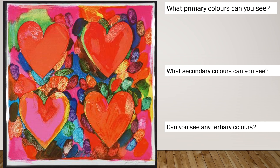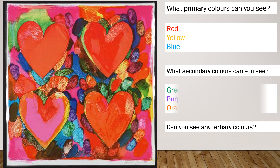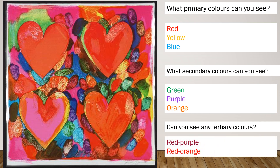Welcome back! I hope that you enjoyed finding the colors. These are the colors that I saw. I found red, yellow and blue in the primary colors — so all three of them. I found green, purple and orange in this painting, so again all of the secondary colors. For the tertiary colors, I saw red purple. Remember we have to say the color name starting with the primary color, and red is the primary. So I saw red purple and red orange. Maybe you saw even more colors than I did.